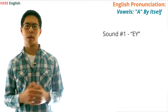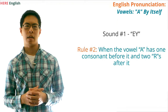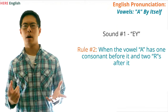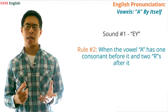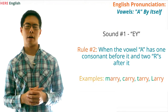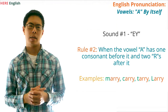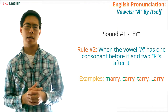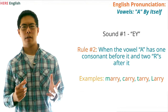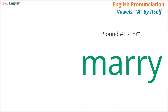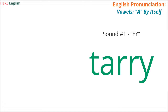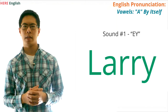Here's the second rule for when the vowel A will sound like A: when the vowel A has one consonant before it and two R's after it, it will sound like A. Examples of words with this rule are Mary, Carrie, Terry, and Larry, which is a name. Now, try saying these words yourself: Mary, Carrie, Terry, Larry.